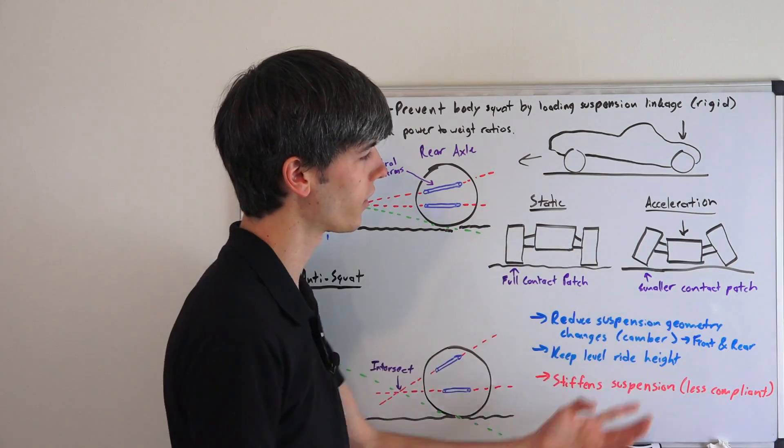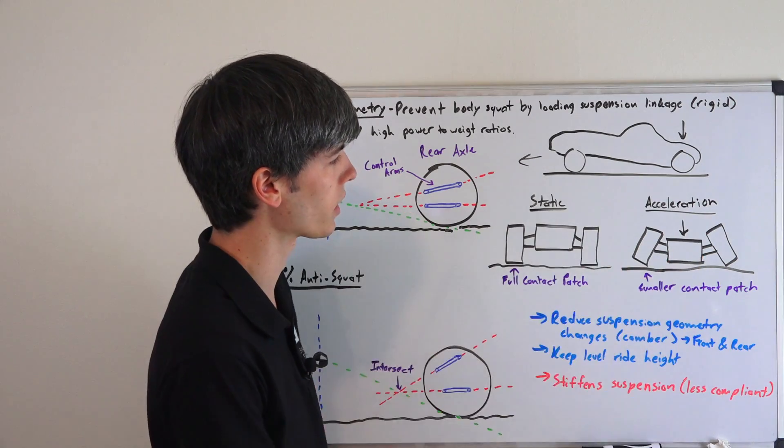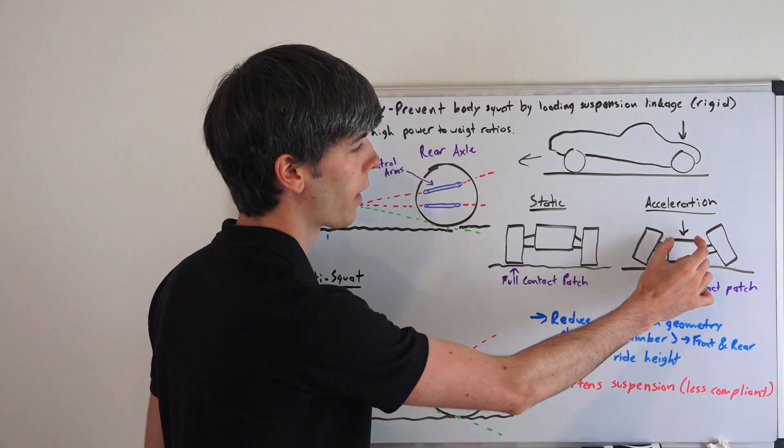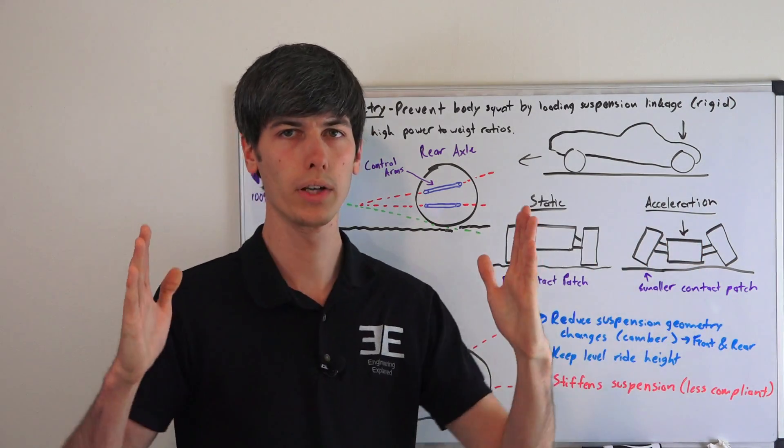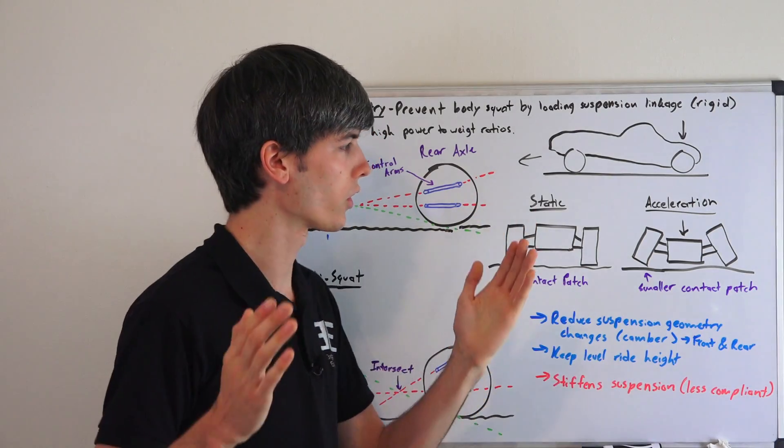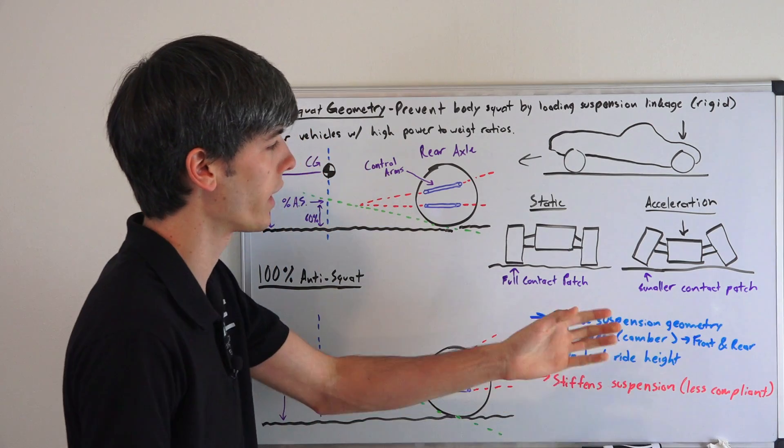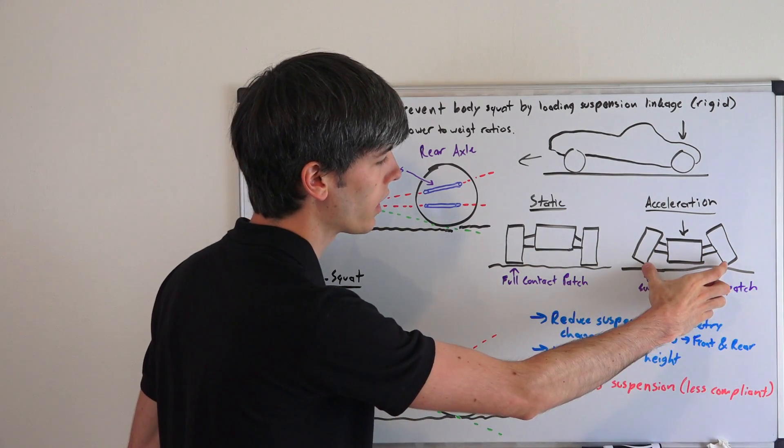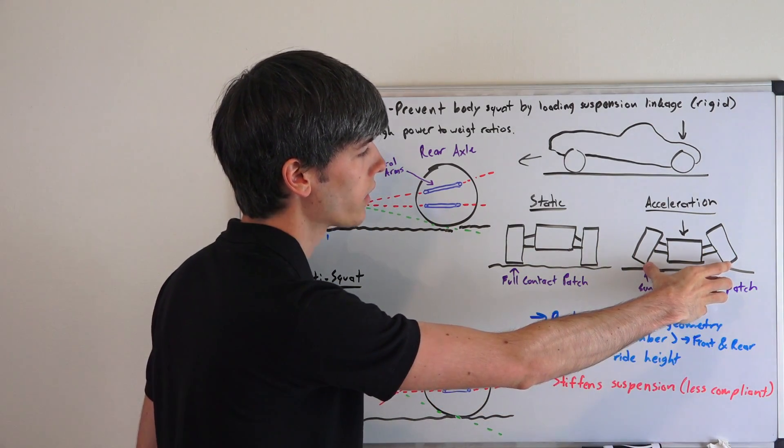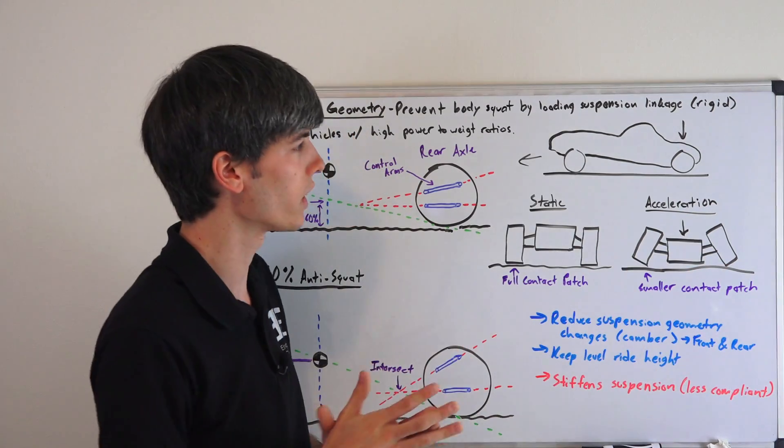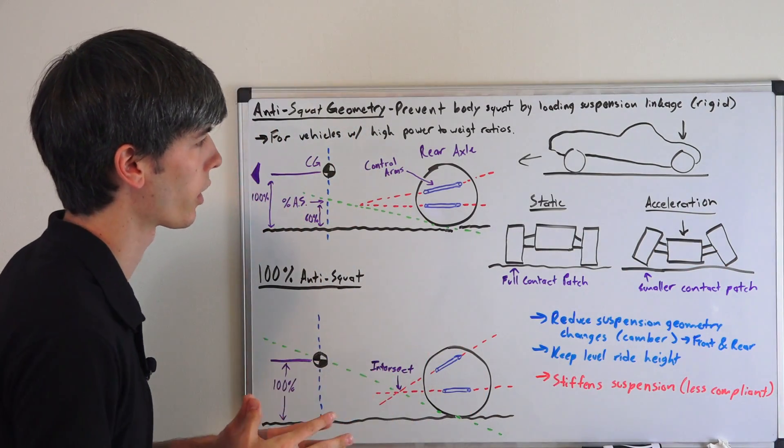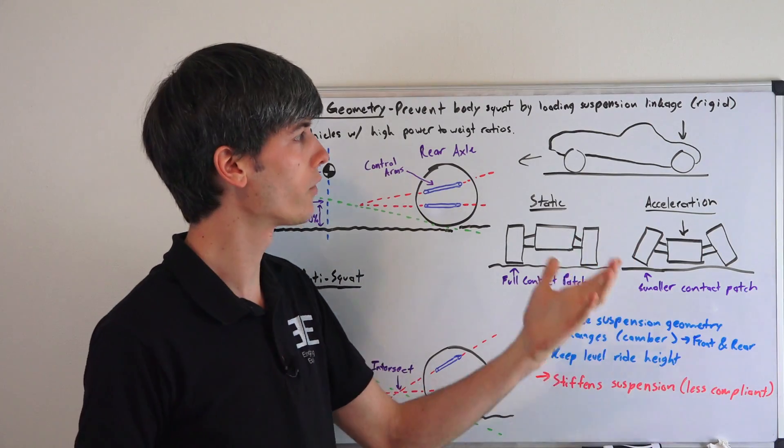But under acceleration, and granted this is a bit exaggerated but so that you can understand the point, under acceleration when that body goes down, those wheels are going to camber out. So you're going to have some negative camber influence, typically based on the suspension design. And so you're going to be reducing your contact patch. And when you're reducing your contact patch, you're reducing the amount of traction that you have. And so you're going to have worse acceleration overall.